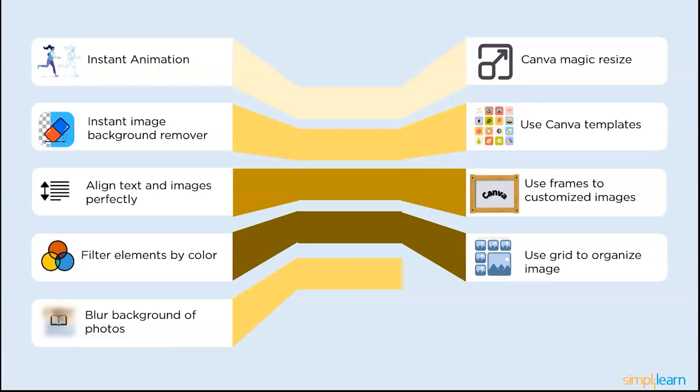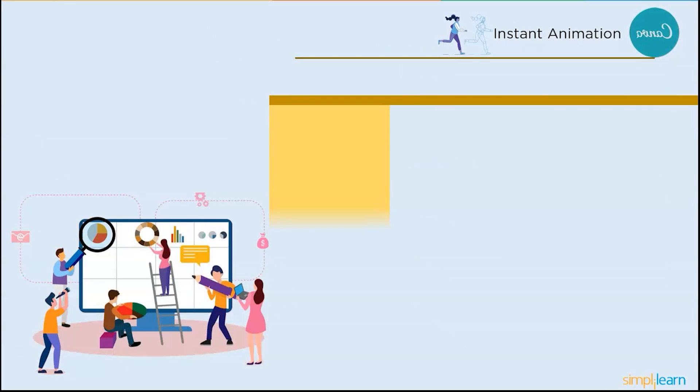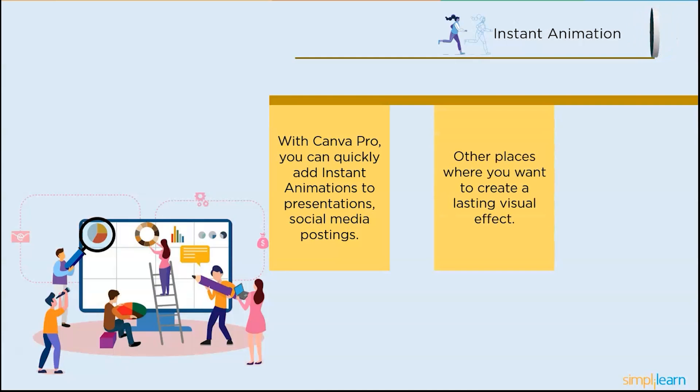Blur the background of the photos, unlock the elements or image position. Let's discuss each point in detail. So the first one is instant animation. With Canva Pro, you can quickly add instant animations to presentations, social media postings, and other places where you want to create a lasting visual effect. Click once to start animating and save the file as a GIF. Thus your customized animation films will help in improved knowledge intake and storage. A free animated movie generator includes all the tools you want, whether you are creating a video for a lecture in your class or presenting an idea at work.